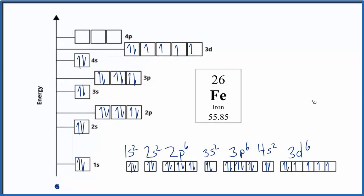When we talk about charges with metals — transition metals — they will be positive, but it's a little bit more complicated. There's a link in the description to a video that discusses how to write the orbital diagrams for transition metals.